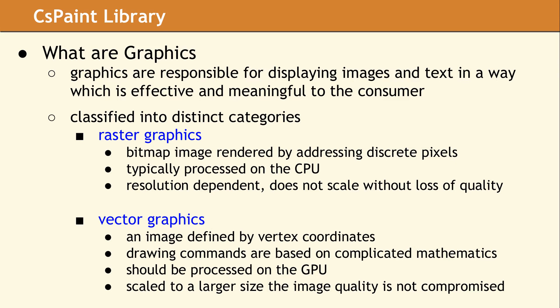So what sorts of things fall under the heading of graphics? Graphics are anything responsible for displaying images or text, usually on the screen. The optimal goal is to display these items in a way which is effective and meaningful to the consumer. Graphics rendering is divided into two main categories: raster and vector.